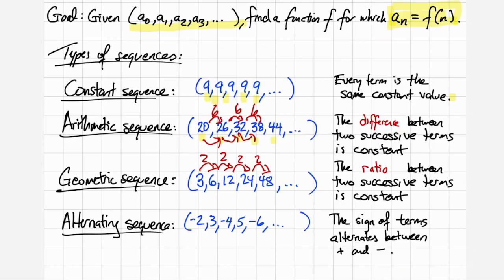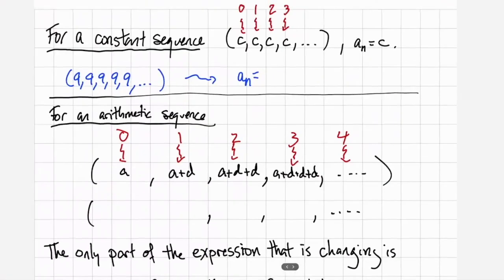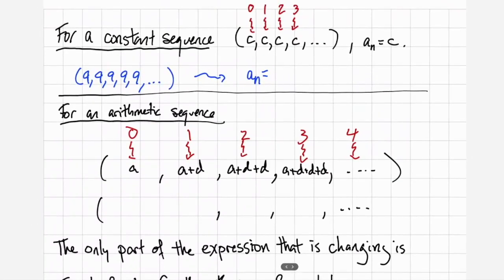And lastly we'll be considering alternating sequences where here you see the signs of the successive terms alternate between negative, positive, negative, positive, negative. So let's talk about how we can find the formula for the different types of sequences here.